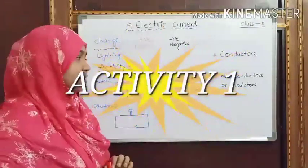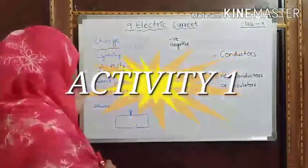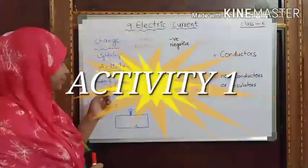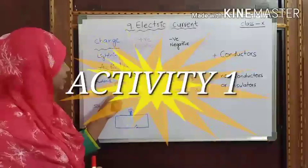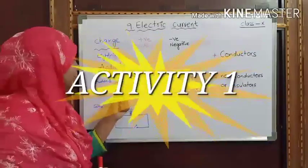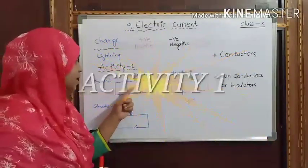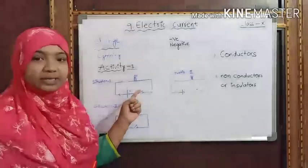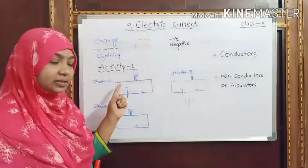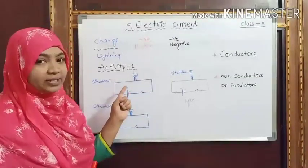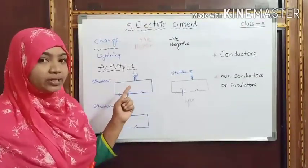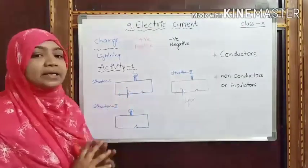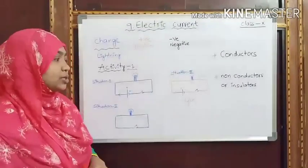Let us do some activity to know more about this motion of charges. In this activity, I have taken an electric bulb, a battery, a switch, and some connecting wires. The connecting wires are insulated copper wires, used to make a simple electric circuit.